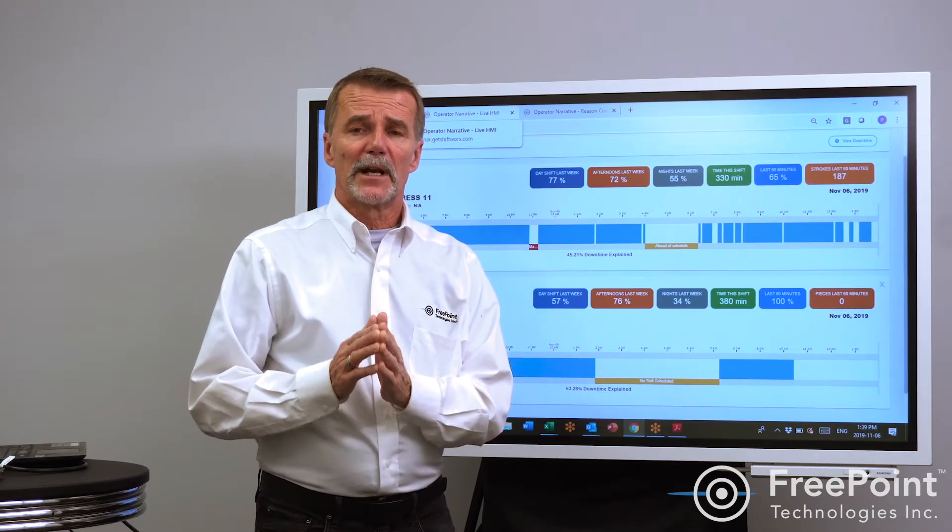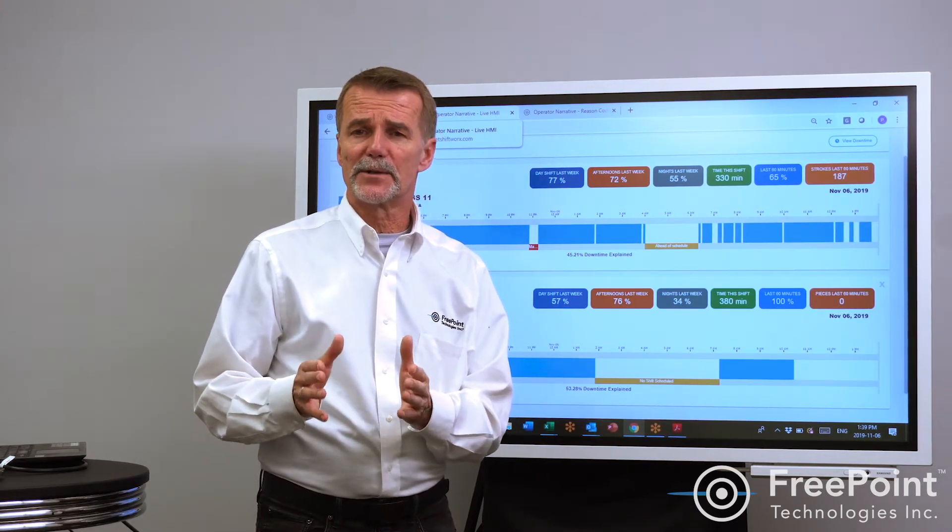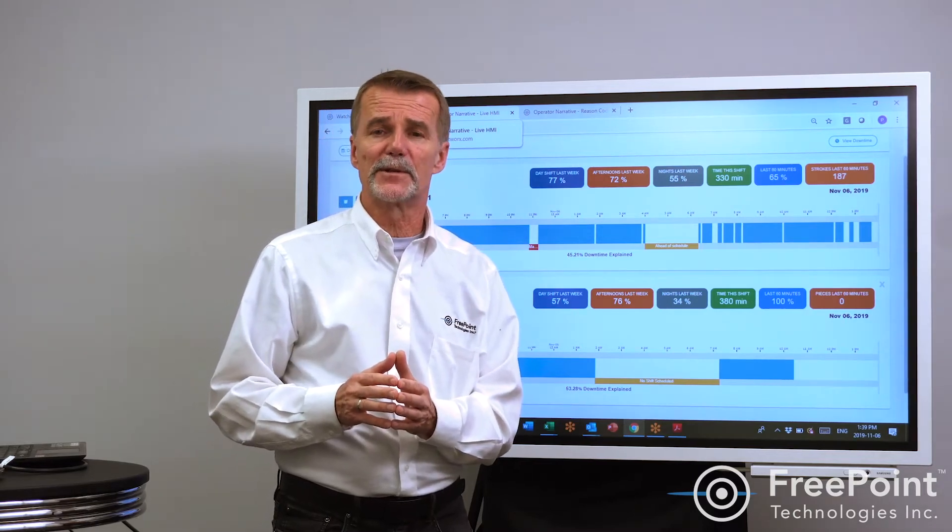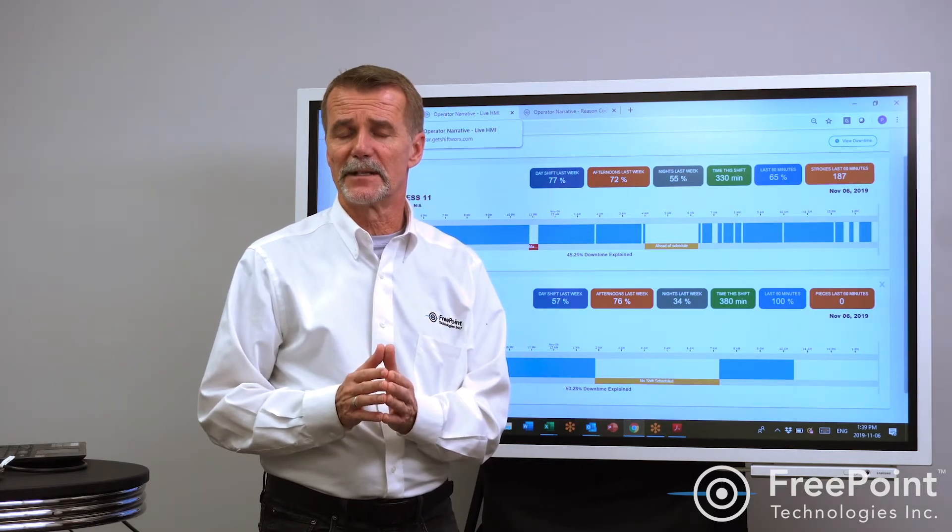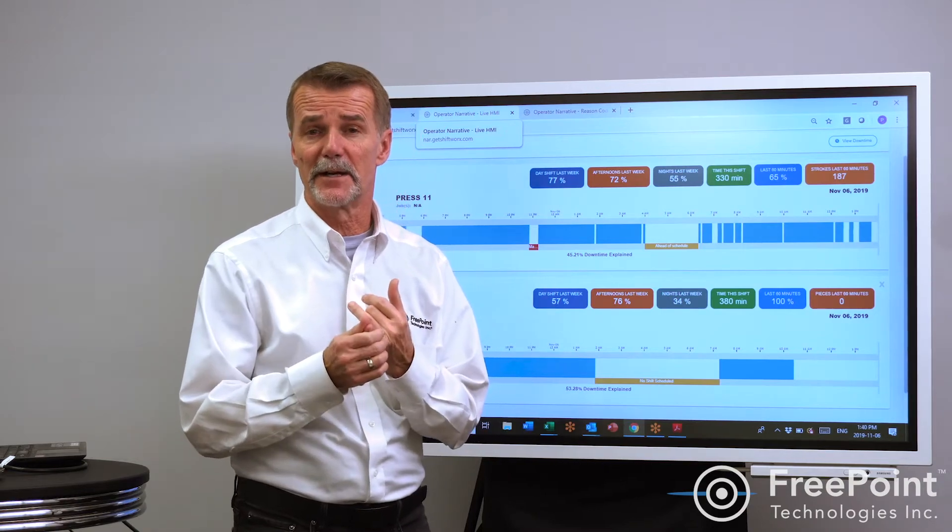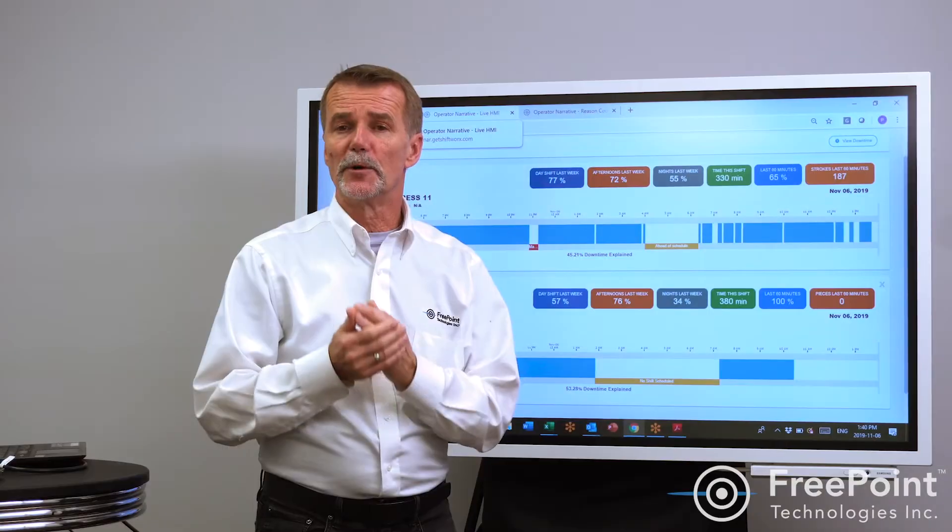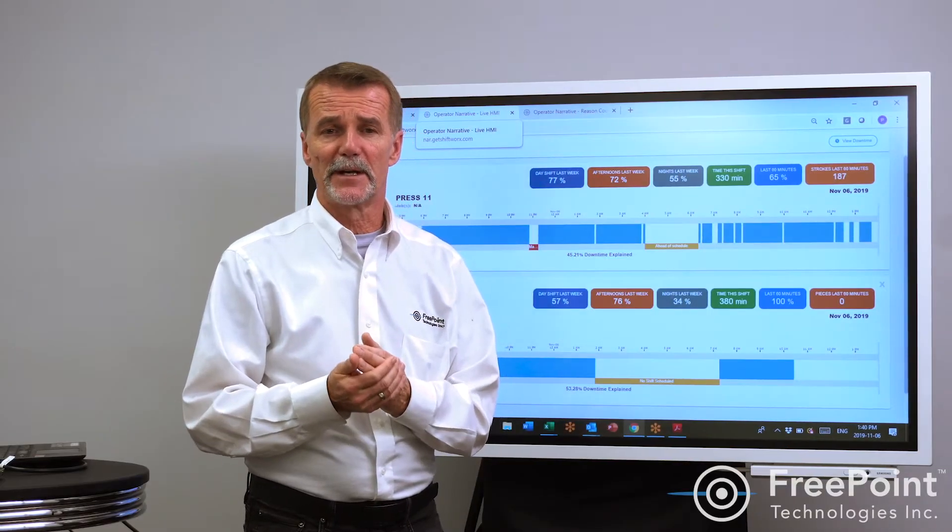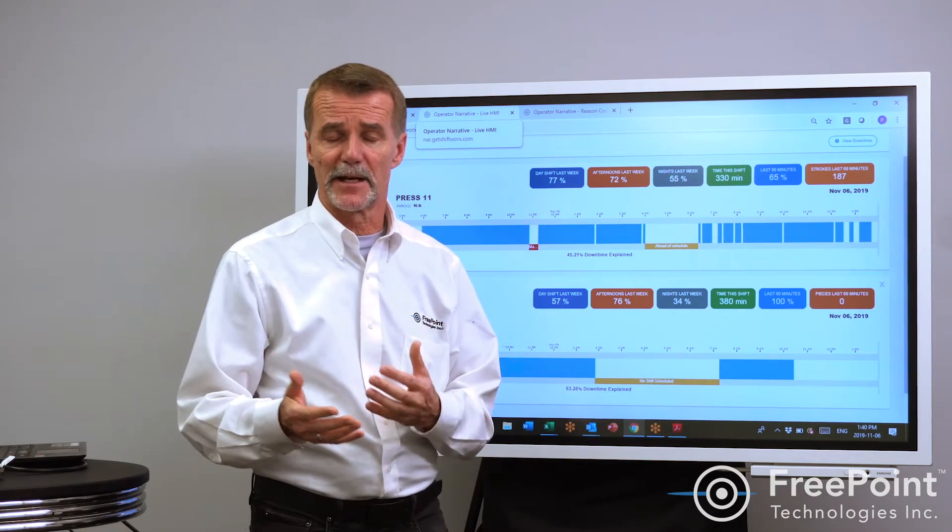So at FreePoint we allow you to make your own downtime codes, your own downtime categories. One of the things that we would do is we would suggest that you create different categories. Expected downtimes make them amber. Good downtimes, good reasons for being down like setup changes and things like that make them green.